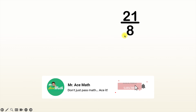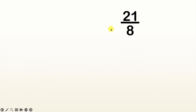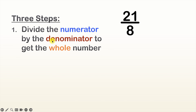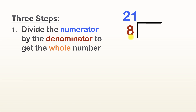Let's say we're starting with the fraction 21 over eight. There are three steps to convert from improper fractions to mixed numbers. Step number one is to divide the numerator by the denominator to get the whole number. We're dividing the numerator, 21, by the denominator, which is eight. Before we can actually divide, we should put it in long division notation, where the top goes inside the long division symbol and the bottom stays outside.